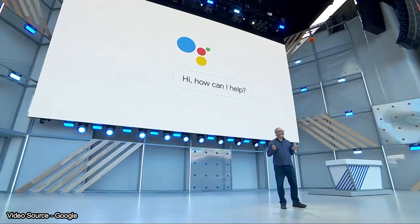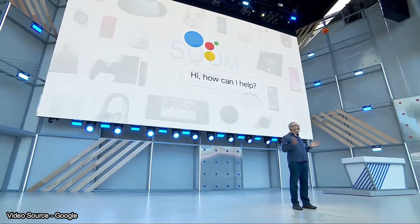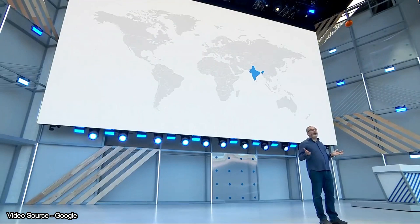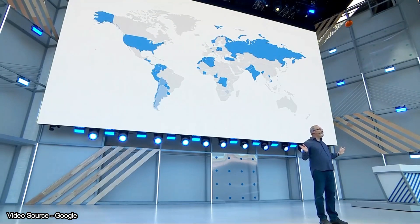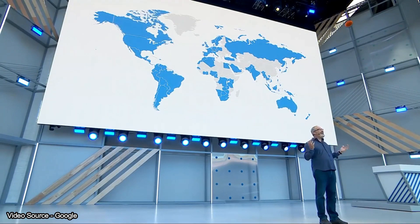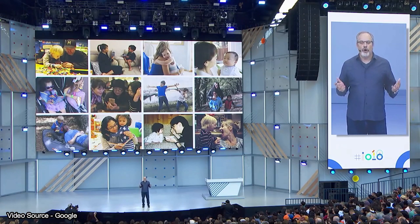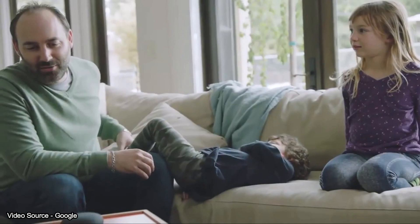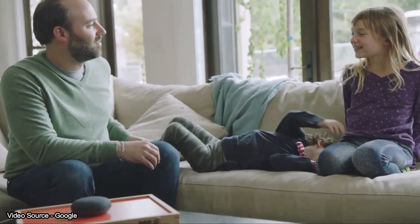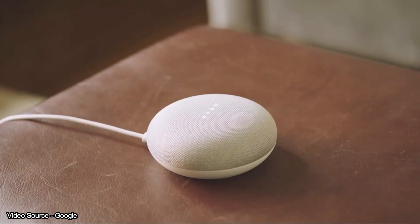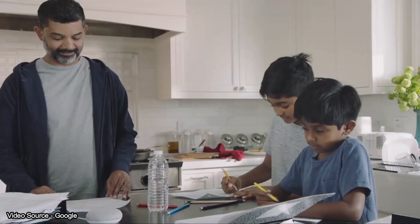Google Assistant is now on 500 million devices. We will also launch multi-language support. There is also a new politeness feature — for example: 'Hey Google, talk to Voice Ron.' The assistant replied: 'Daddy, you forgot to say please.' Then: 'Tell me a story, please.' 'Thanks for asking so nicely. You are very polite.'